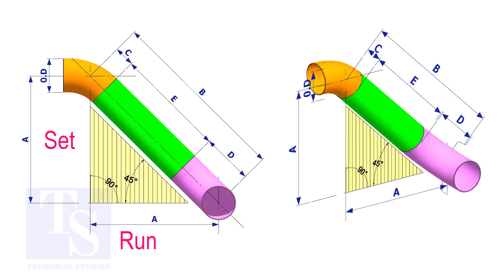In an offset, if the including angle is 45 degree, the set and the run shall be the same. If the value of the set and the run are equal, the value of the travel is set or the run multiplied by 1.414.